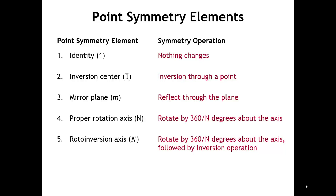We can have a mirror plane, and the operation associated with a mirror plane is, as the name implies, a reflection through the plane. And then we can have a proper rotation axis. So for a three-fold rotation axis, we rotate by 360 divided by n. For n equals 3, the rotation is 120 degrees, meaning after doing that operation three times we're back to where we started. For a six-fold rotation axis, we rotate by 60 degrees and go around six times.